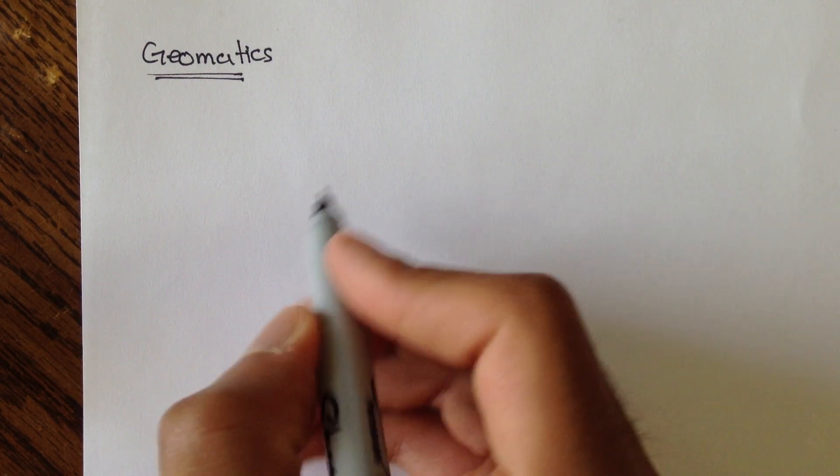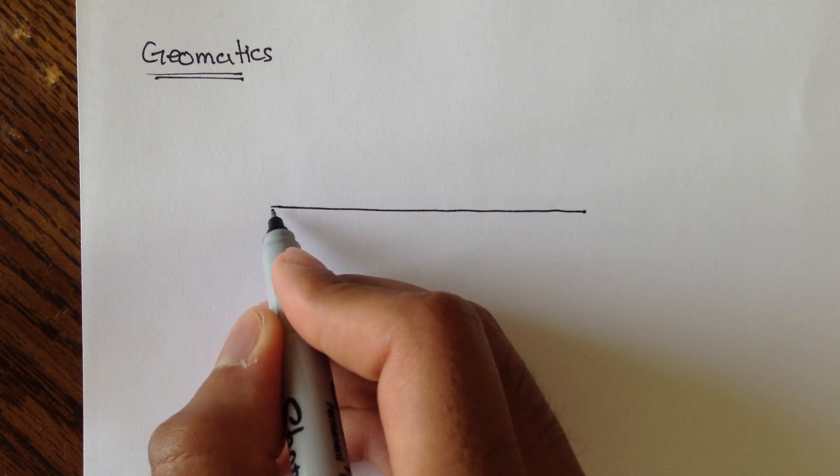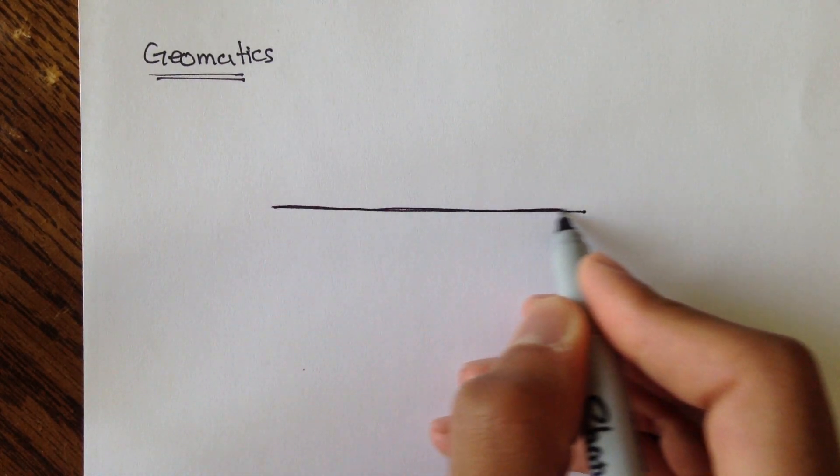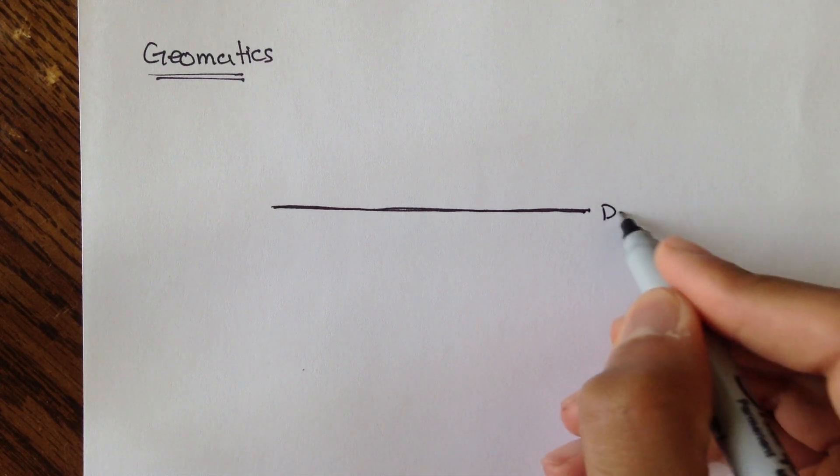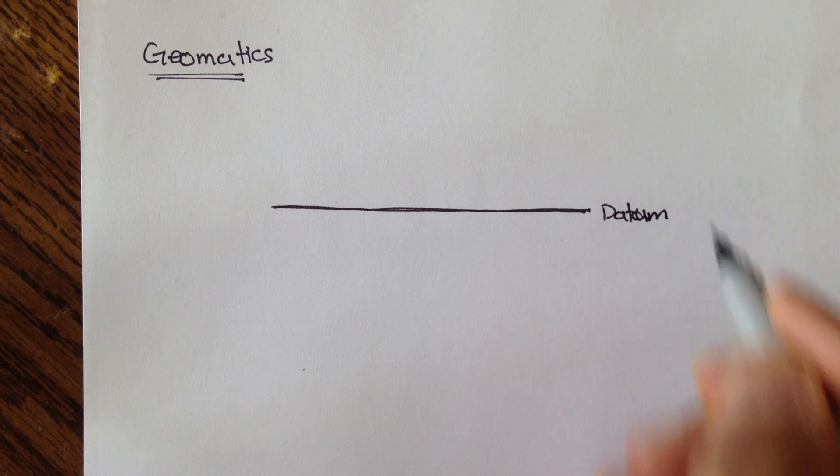Before we get into three-wire leveling, I want to do a quick, very quick review on differential leveling. Remember, differential leveling was based on, just as three-wire leveling, a set datum. Datum. And it was usually zero. Zero elevation.